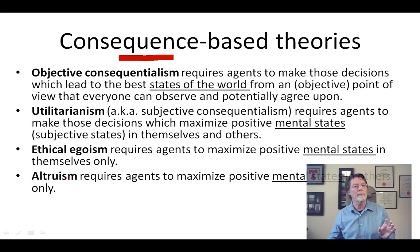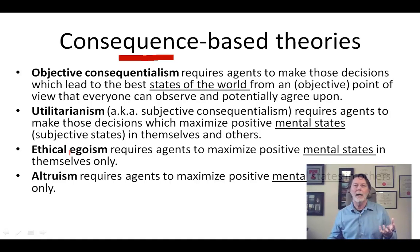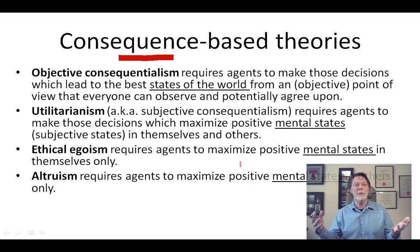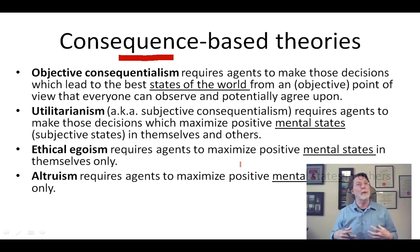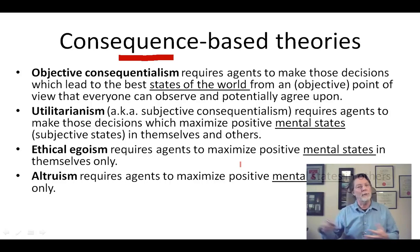Egoism focuses on oneself only. And finally, altruism — the contrary of ethical egoism — requires agents to maximize those mental states in other people: worry about others and not about yourself at all. The difference is that the utilitarian not only thinks about others but counts themselves as well. The ethical egoist counts themselves only, the altruist counts others, and the utilitarian counts everybody.